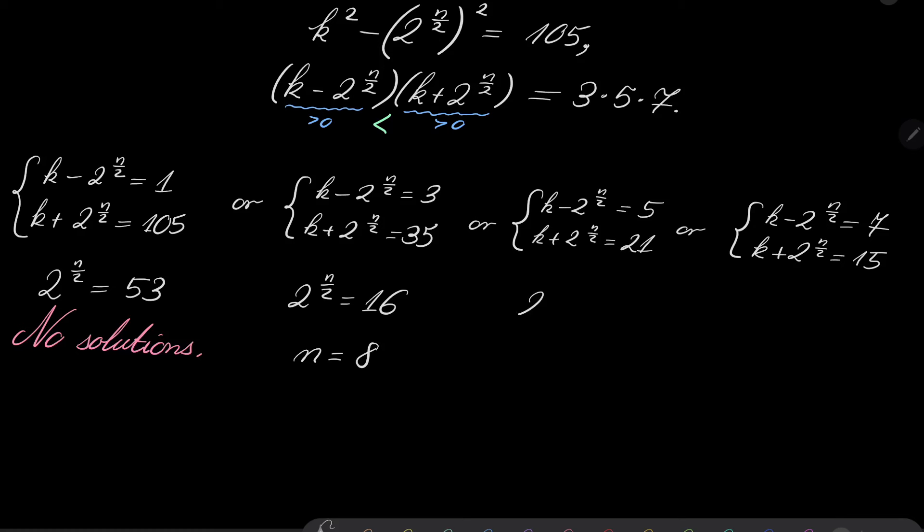Next, 2 to the power of n over 2 equals 21 minus 5 is 16. 16 over 2 is 8. So, n equals 6.